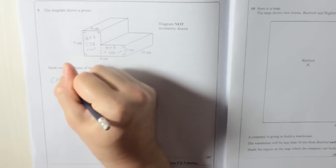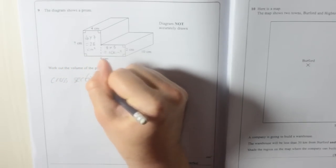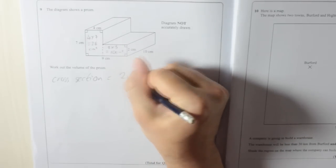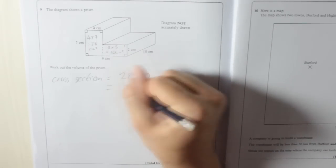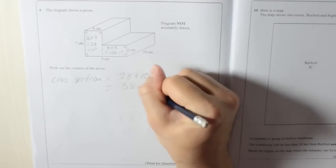So cross section is equal to 28 plus 10, 38 cm².